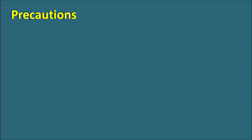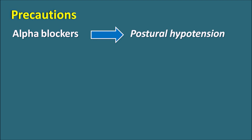What are the precautions? First is the use of alpha blockers. Alpha blockers produce postural hypotension as a side effect, and Vardenafil can also produce hypotension. When alpha blockers are used along with Vardenafil, there is an increased risk of hypotension which can produce syncope and fainting. Care should be taken to prevent severe hypotension in such cases.